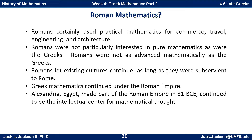Romans did let existing cultures continue as long as they were subservient to Rome. Romans were advanced in some areas but behind in others compared to other cultures. They did like a lot of Greek culture, so Roman culture absorbed much of it. Greek mathematics continued under the Roman Empire, but it would probably still be more correct to call it Greek mathematics than Roman mathematics — there are very few Roman mathematicians apart from the Greek mathematicians.